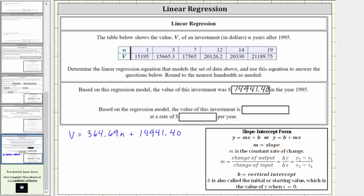To understand the meaning of the slope though, we need to recognize that the slope m in our case is not equal to the change of y divided by the change of x, it's equal to the change in V, or the change in the value in dollars, divided by the change in n, which is the change in the number of years. So because the slope is 364.69,